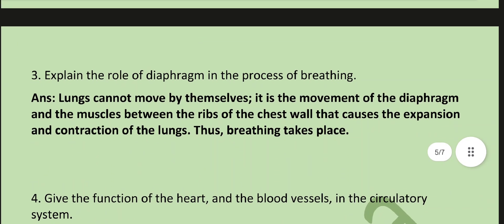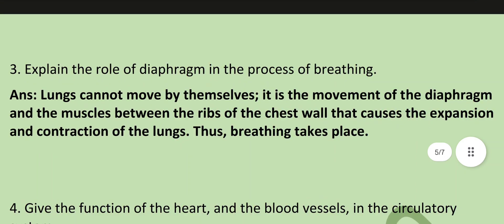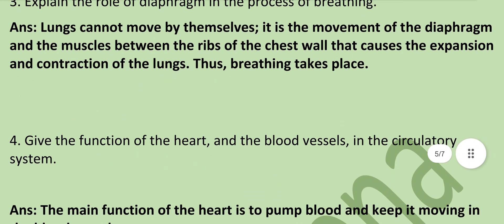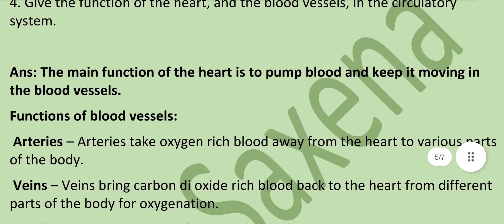Explain the role of the diaphragm in the process of breathing. Lungs cannot move by themselves; it is the movement of the diaphragm and the muscles between the ribs of the chest wall that cause the expansion and contraction of the lungs, thus breathing takes place. Give the function of the heart and blood vessels in the circulatory system: the main function of the heart is to pump blood and keep it moving in blood vessels.